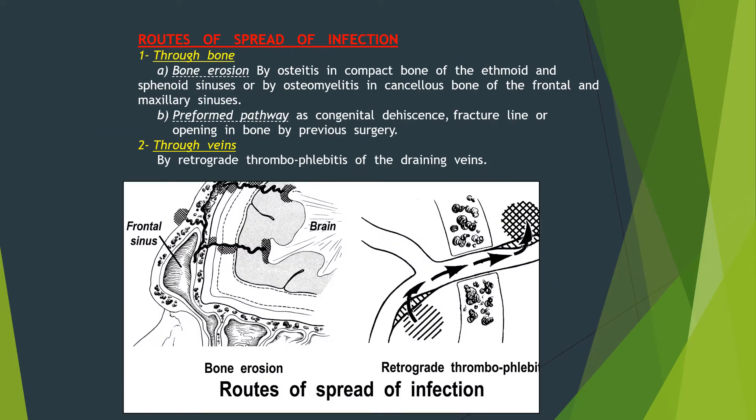What are the routes of spread of infection? Through the bone by osteitis in the compact bone of the ethmoidal and sphenoidal sinuses, or by osteomyelitis in the cancellous bone of the frontal and maxillary sinuses, or by a preformed pathway at a congenital dehiscence, a fracture line, or an opening in bone from a previous surgery. Infection can also spread through veins by retrograde thrombophlebitis of the draining veins.